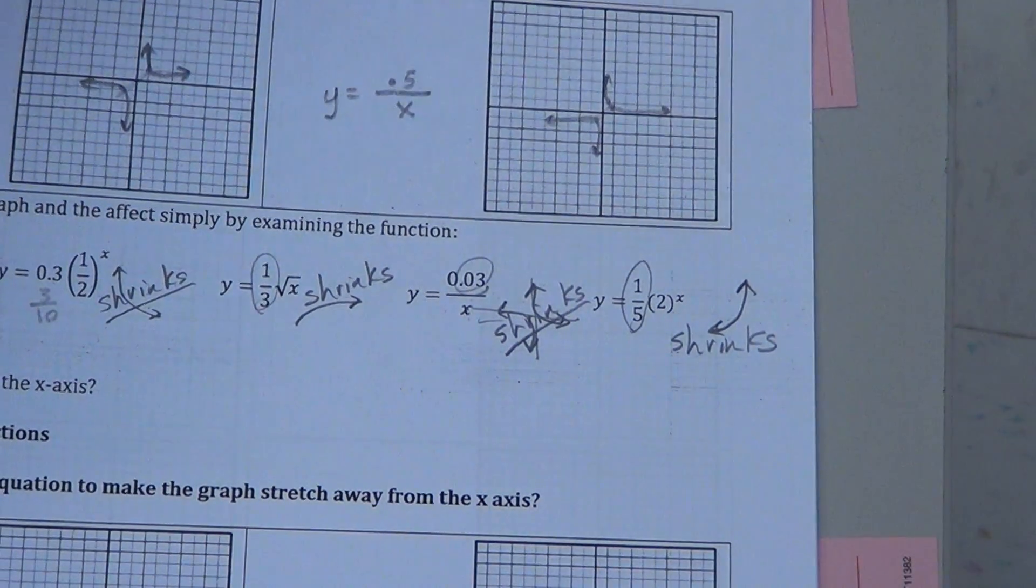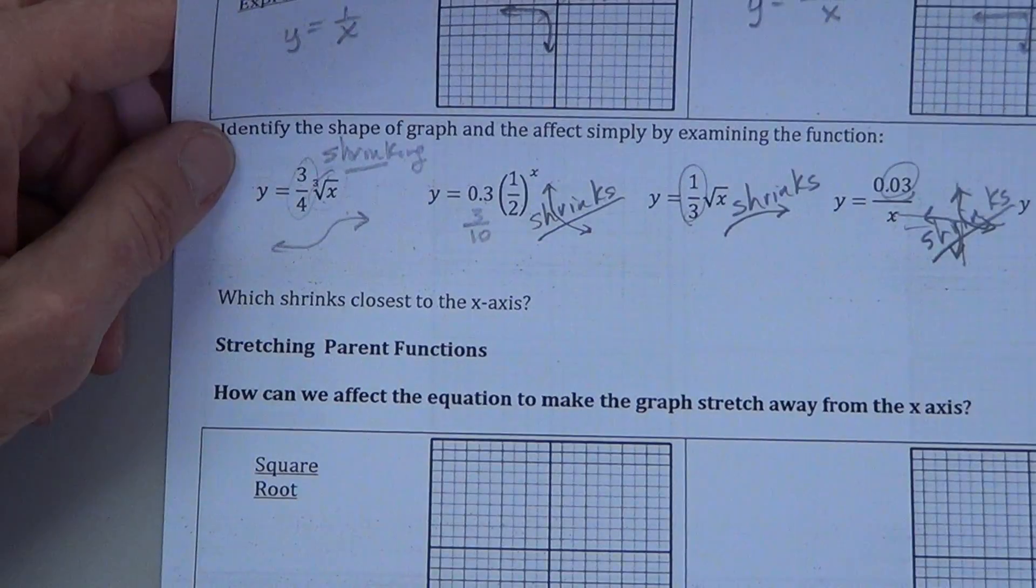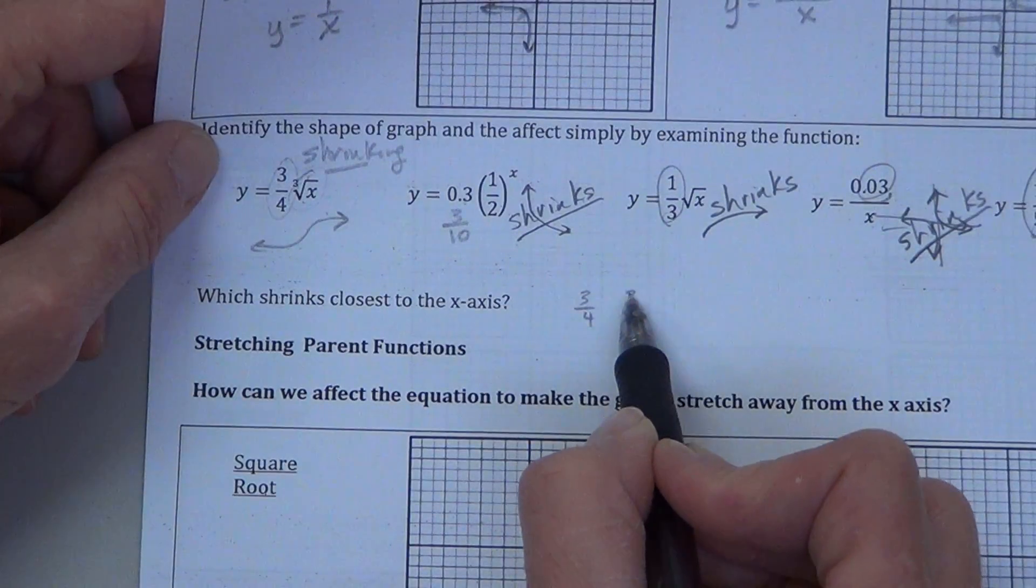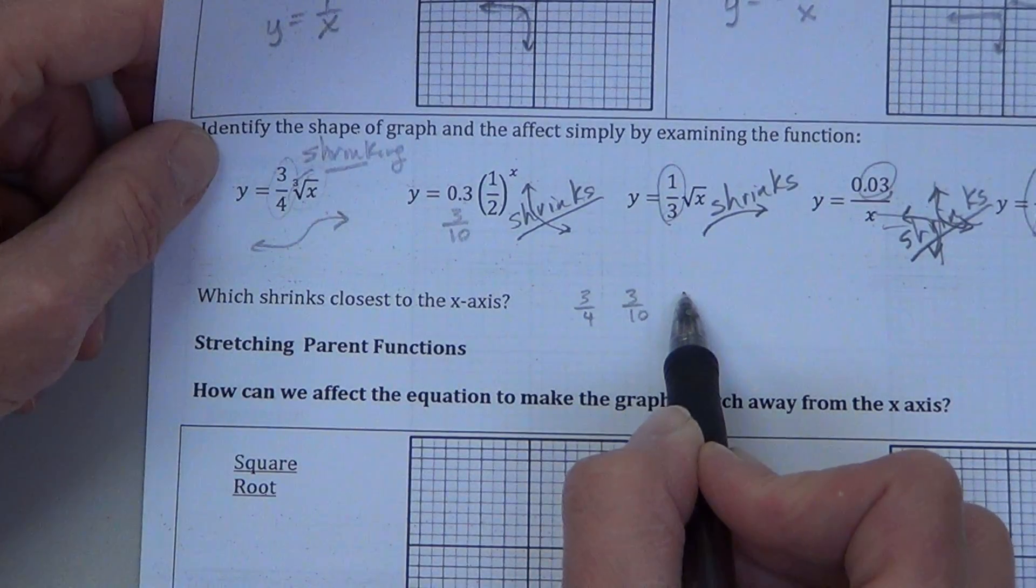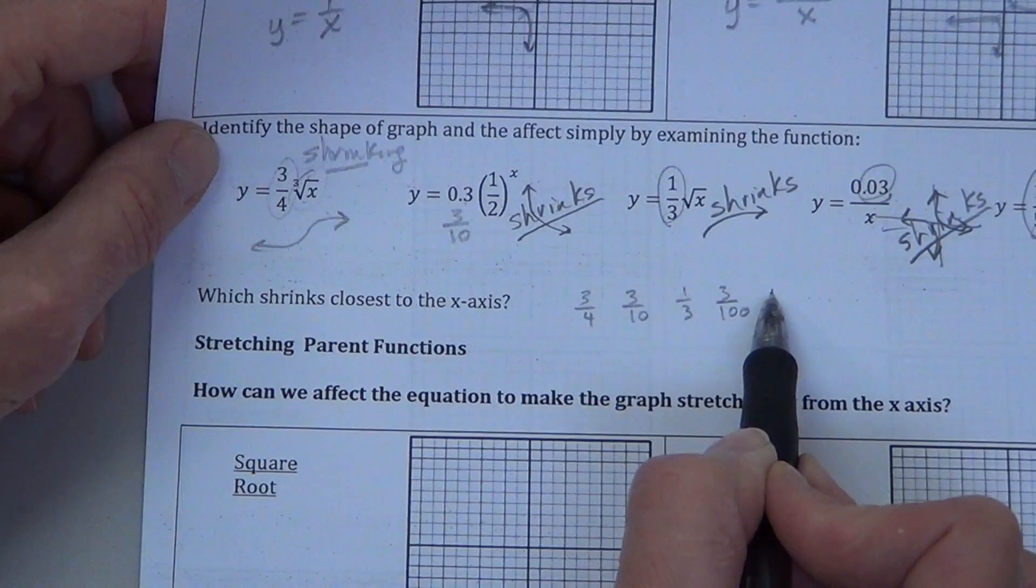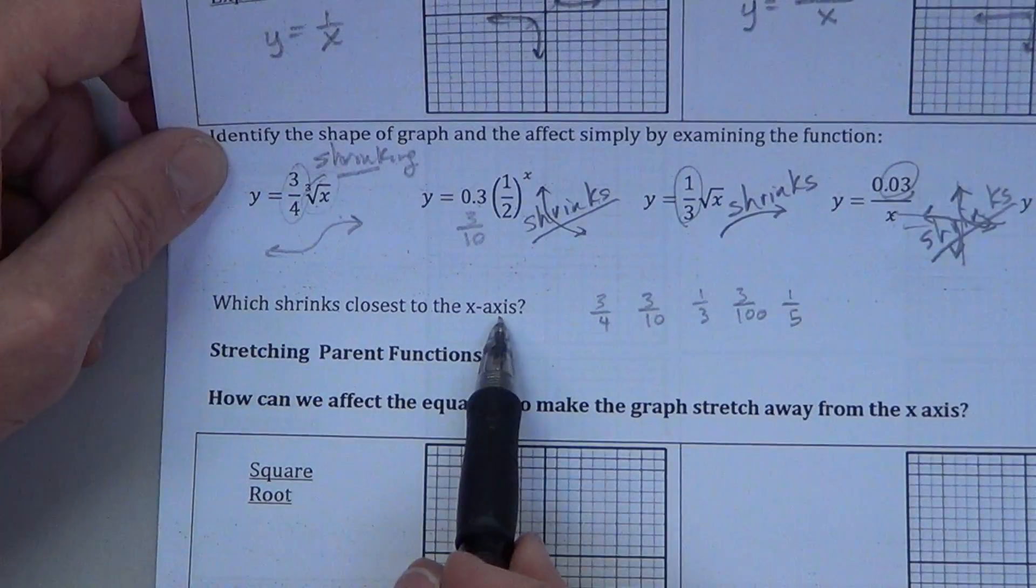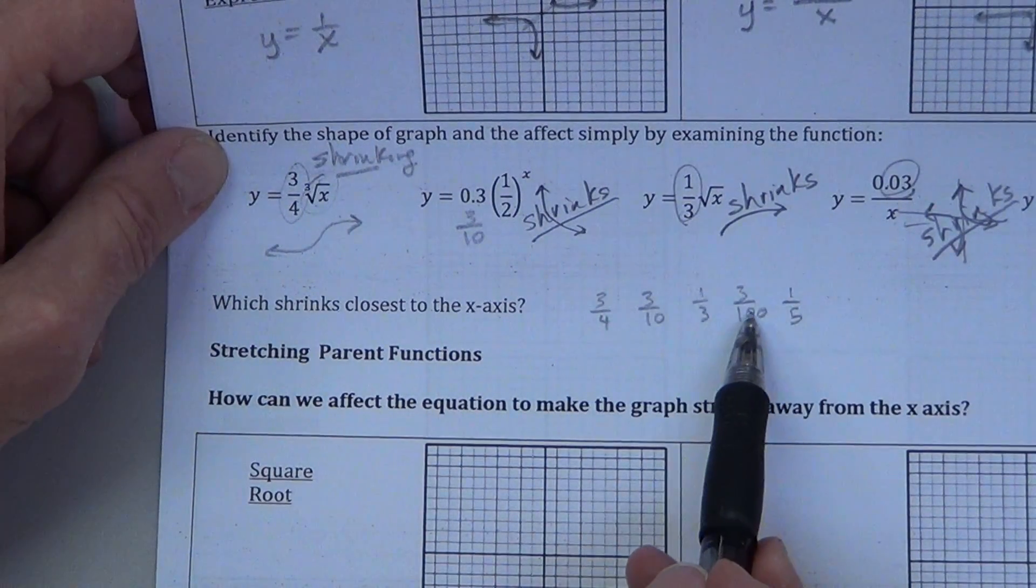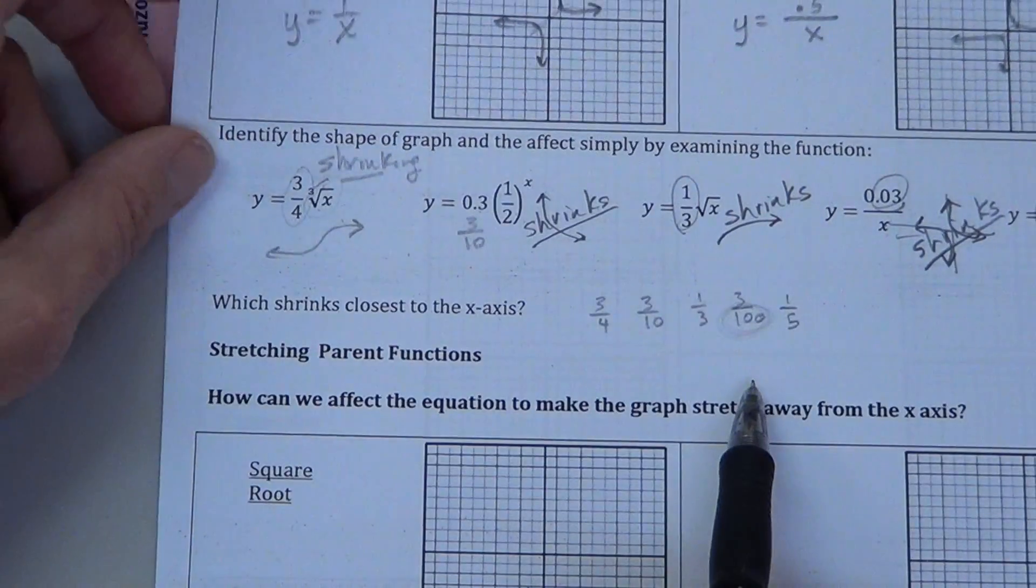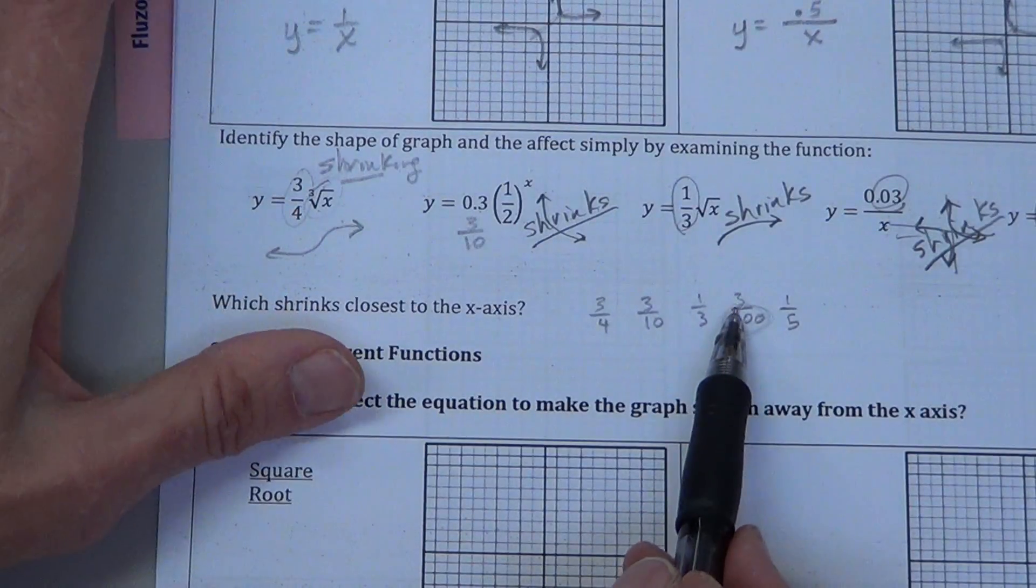I would expect you to be able to look at those and picture in your mind's eye what they're going to look like, and whether they're shrinking or not. Which one shrinks the closest to the x-axis? You would have to put those in order. So we have 3 fourths, 3 tenths, 1 third, 3 hundredths, and 1 fifth. Well, in order to see which one's closest to the x-axis, we would look at our denominators. The one that's cut into the tiniest pieces is the hundredths. The hundredths would be your smallest pieces, because it's the most pieces within one. And there's only three of those.